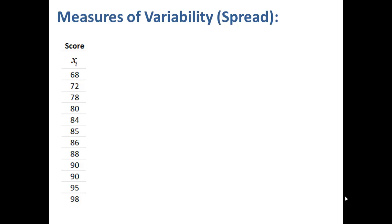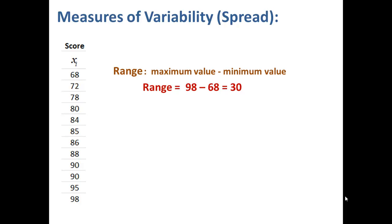Next we'll look at measures of variability or spread. The range is the difference between the maximum value and the minimum value of a data set. In this case, we calculate the range by subtracting 68 from 98 to get 30. The range is a single number — the difference between the maximum and minimum values — and it is sensitive to extreme values, since extreme values sit at either end of the data set and are the values used to calculate the range.